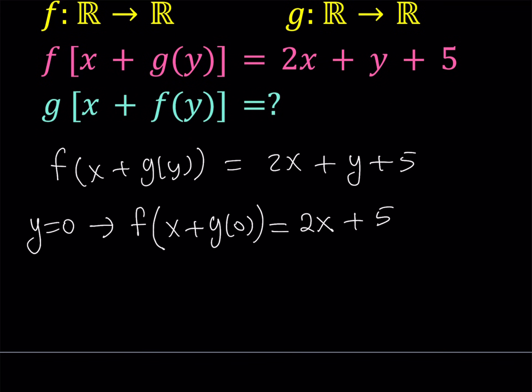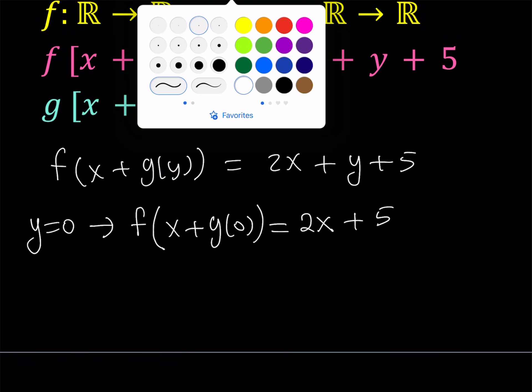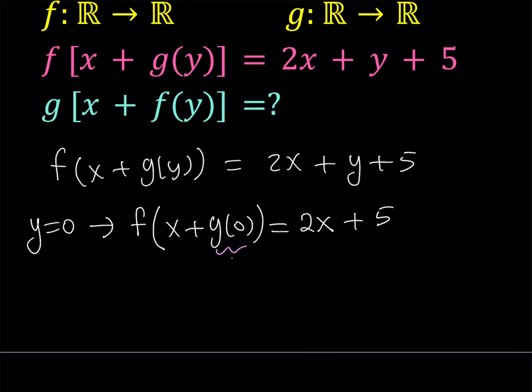There are two different functions and also we are using two different variables, x and y. When I replace y with 0, I'm not replacing x with anything. So x stays as this. Let's just make that clear. When y is 0, this is going to be 2x plus 5.